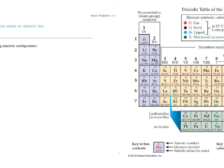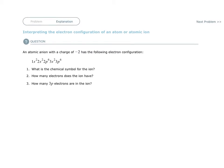So what are they asking us? What is the chemical symbol for the ion? Well, the chemical symbol for the ion is sulfur, but it's going to be sulfur with a 2 minus because it's an anion.